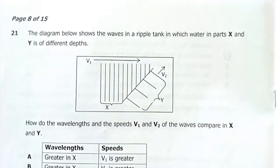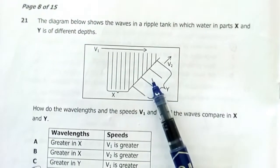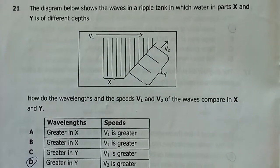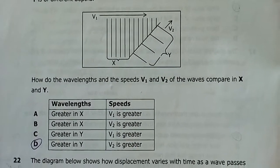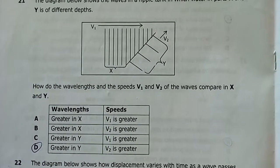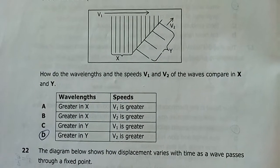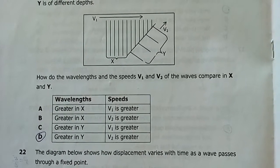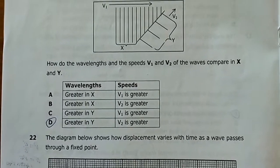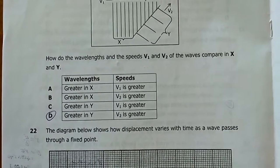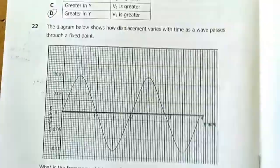Question 21: Waves in a ripple tank where water in parts X and Y is of different depths. The deeper part has longer wavelength and greater speed. My answer is D — wavelength in Y is greater, and speed v2 is greater. Water waves move faster in deeper water and slower in shallower water.